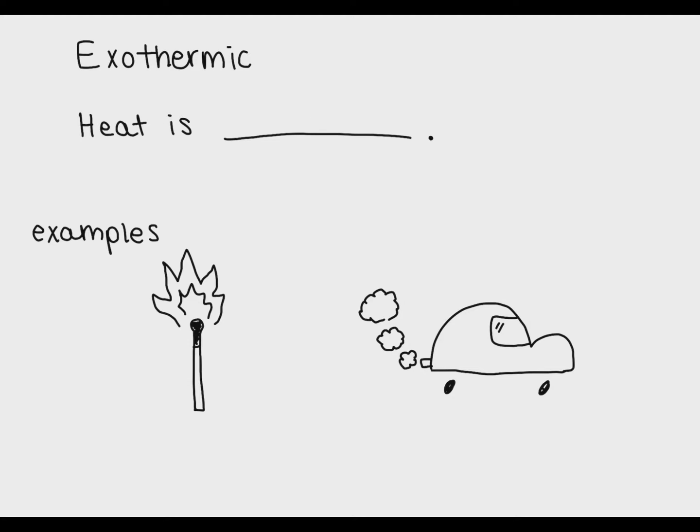First let's talk about what an exothermic process is. In an exothermic process heat is released or heat leaves your system. Typically in an exothermic process the object gets hot.